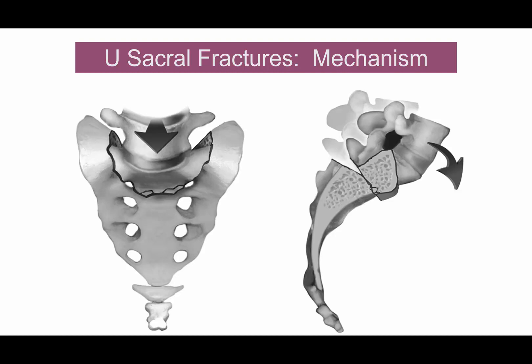The U-type is a bad actor. The mechanism involves a spinopelvic dissociation, which is not something you see in most typical pelvic ring injuries. What I tell residents is that if you ever see an axial CT with bilateral vertical sacral fractures, and you get a call saying the patient has bilateral sacral ala fractures, ask: are you sure there isn't something that connects them — a U-shaped phenomenon? You have to look at the sagittal imaging; it's critical. Make sure you get sagittal sacral reconstructions.